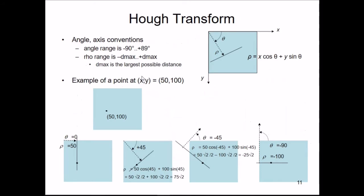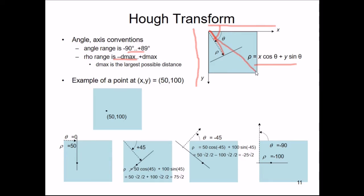Let me exemplify the angle axis convention. In Hough transform, we have Cartesian points (x, y), parameter ρ and θ, and the line equation ρ = x·cos(θ) + y·sin(θ). The angle range is from -90° to +89°, and the ρ range is from -D_max to +D_max, where D_max is the maximum diagonal distance in the image. For example, take a point at (50, 100) in Cartesian coordinates.